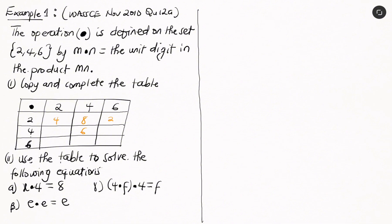We are looking at the WASSCE November 2010, question number 12a. It says that the operation — the big dot — is defined on a set of numbers {2, 4, 6} by: m dot n equals the unit digit in the product of m and n. We have to copy and complete the table given, then use the table to solve: (α) x ⊙ 4 = 8, (β) e ⊙ e = e, and (γ) 4 ⊙ (f ⊙ 4) = f.